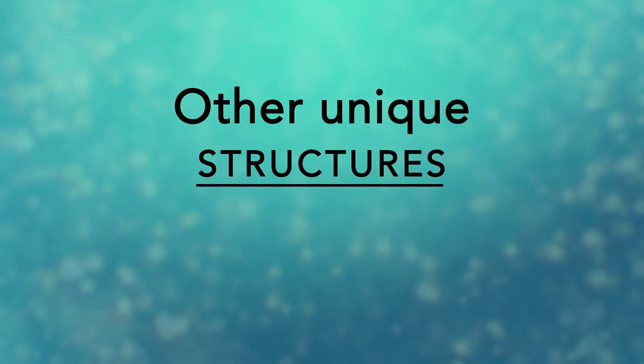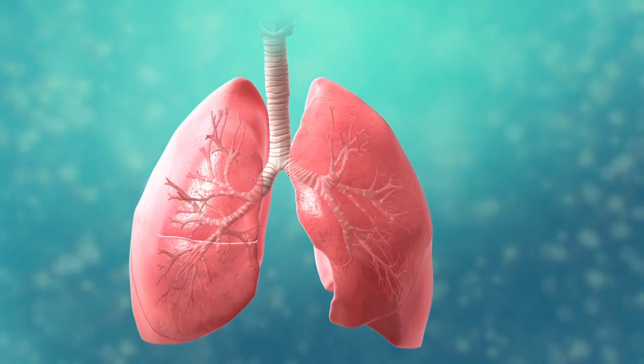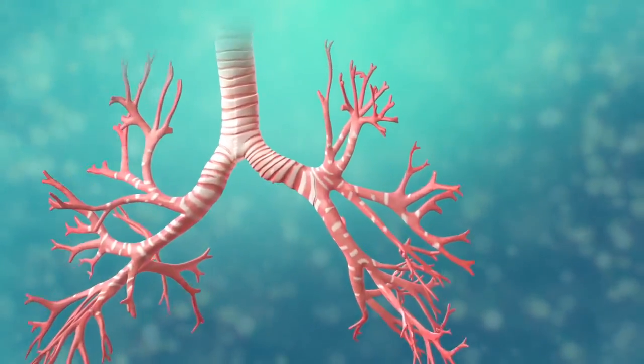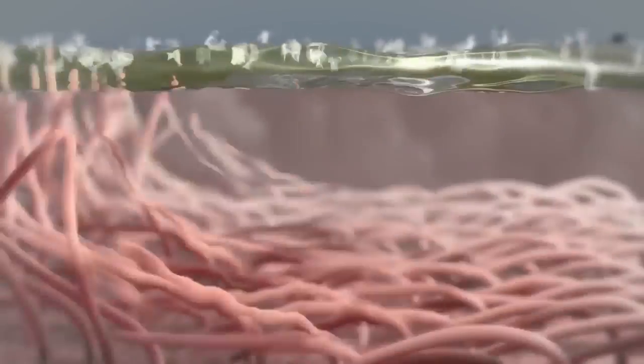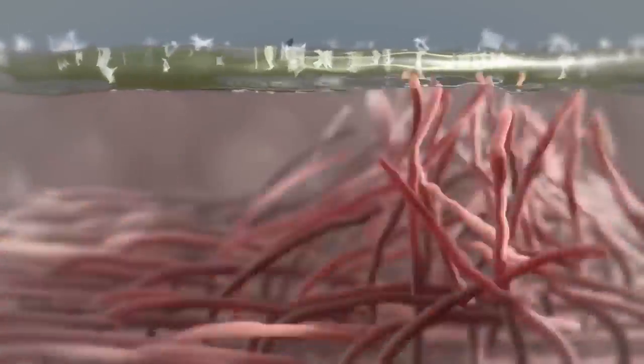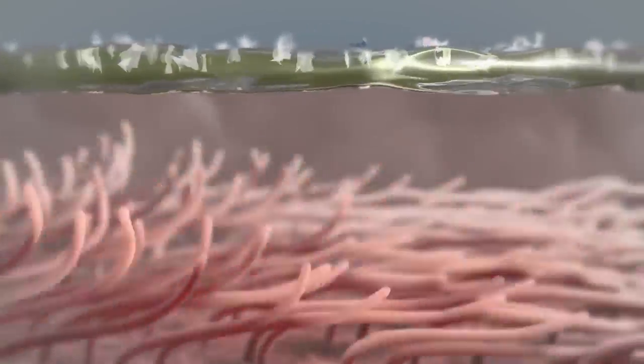There are many other unique structures that only some cells have. Here are just a few. In humans, for example, the respiratory tract is lined with cells that have cilia. These are microscopic hair-like projections that can move in waves. This feature helps trap inhaled particles in the air and expels them when you cough.